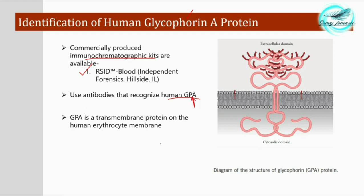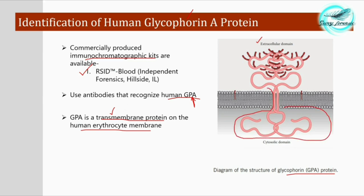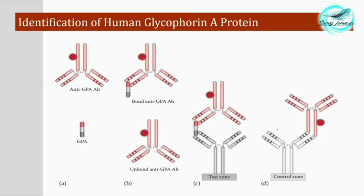GPA, or glycophorin A, is a transmembrane protein on the human erythrocyte membrane. Please have a look at this figure showing the glycophorin A protein. It is a transmembrane protein because it is present in the extracellular domain, passes through the cell membrane, and extends to the intracellular or cytosolic domain as well. Hence it is present in both the outer and inner domains of the cell.